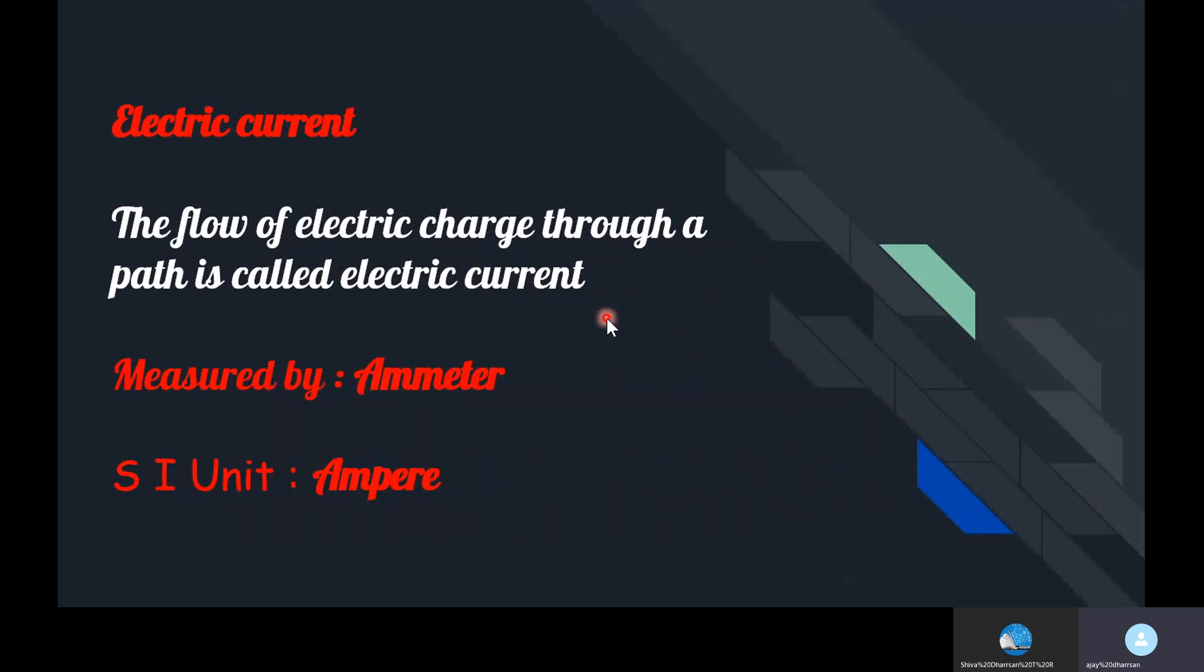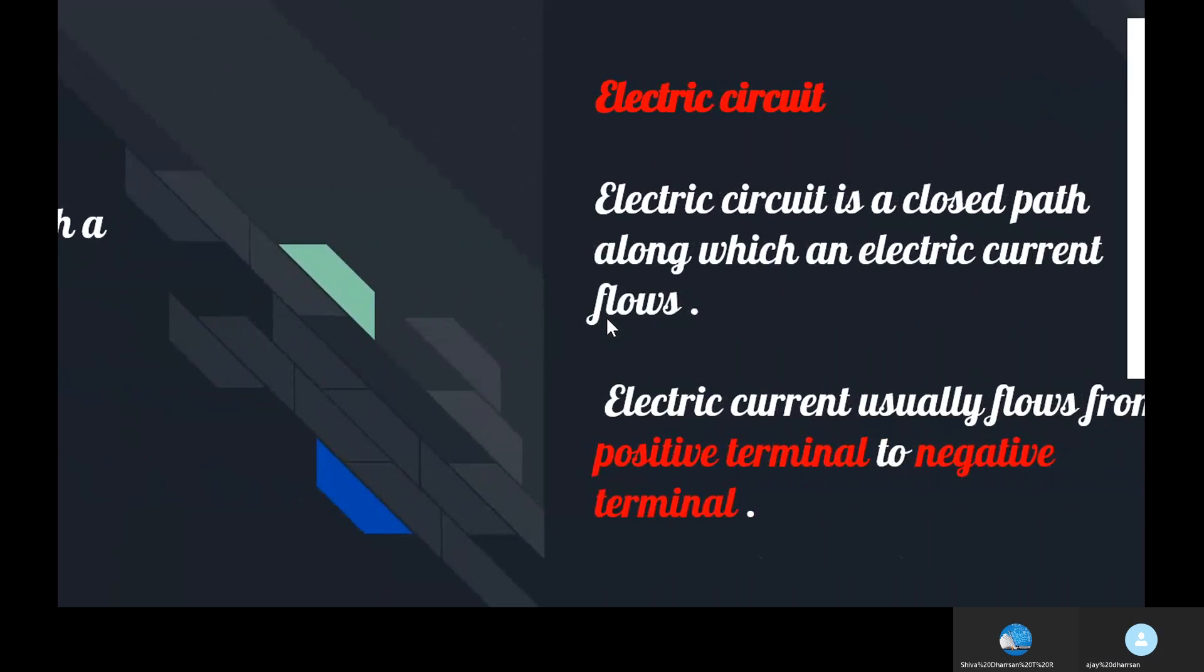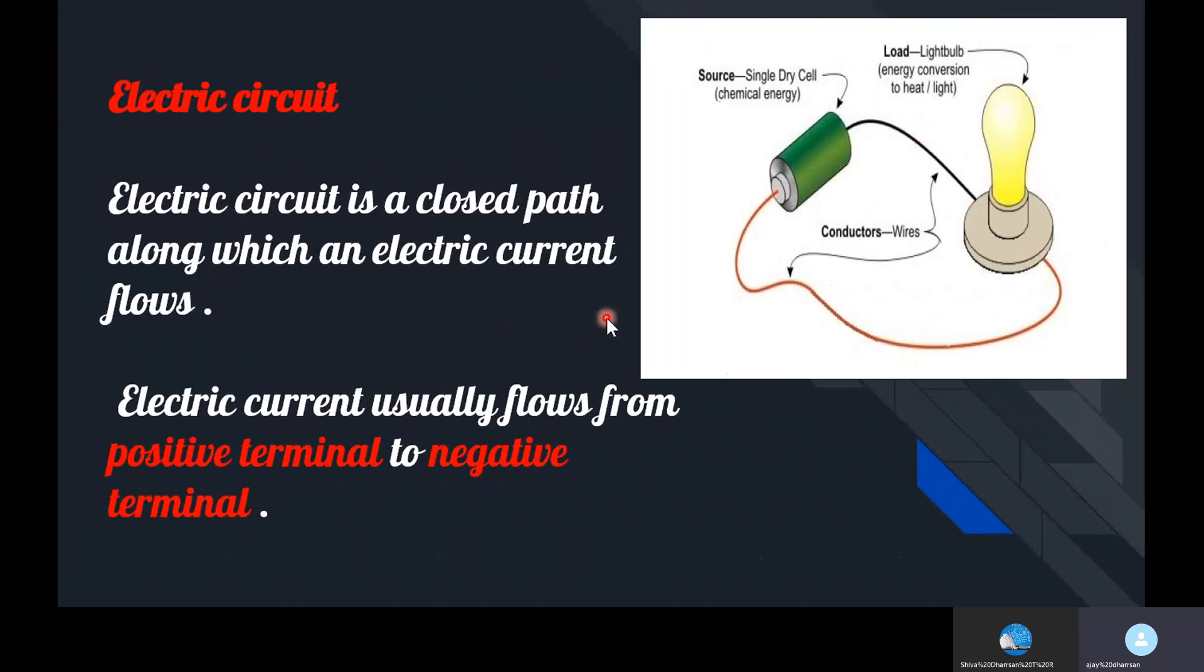It is measured by ammeter. SI unit of electric current is ampere. Electric circuit: electric circuit is a closed path along which an electric current flows. Electric current usually flows from positive terminal to negative terminal of the cell.